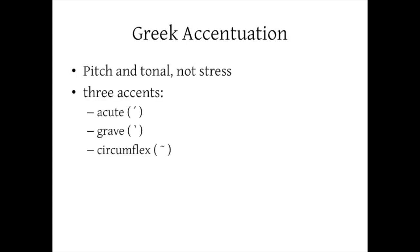There are three accents in Greek. There's what's called the acute, which is a small mark above a vowel that goes from the upper right down to the lower left. This marks a rise in pitch in ancient Greek. The next one is a grave, and it is a mark that goes the opposite direction of the acute, and it denotes a lowering of the pitch in ancient Greek.